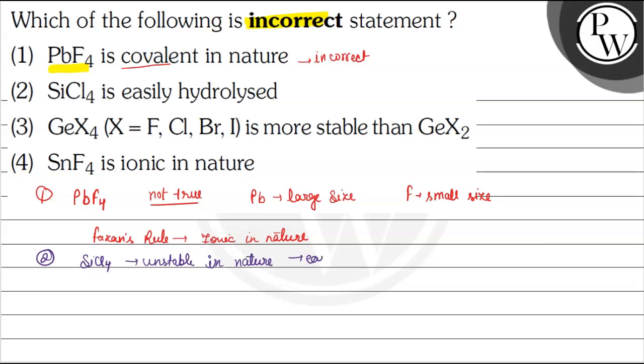Statement number three: GeX4 is more stable than GeX2. In GeX4, germanium has plus 4 oxidation state, and in GeX2, germanium has plus 2 oxidation state.